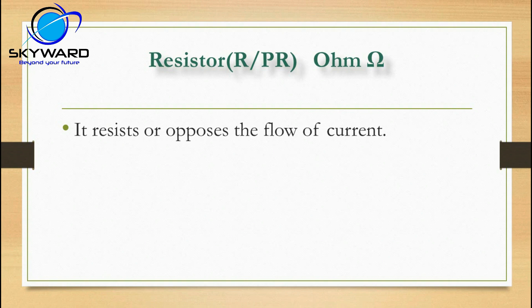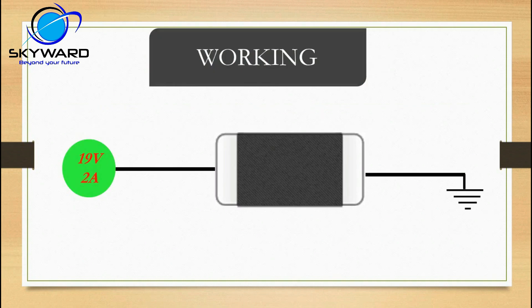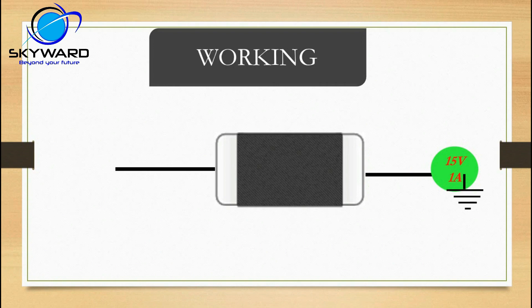Let's see the working of a resistor. For example, 19 volt and 2 ampere is crossing through this resistor. What will happen? It decreases to 15 volt and 1 ampere — it resists some voltage and current. So this is the working of a resistor.